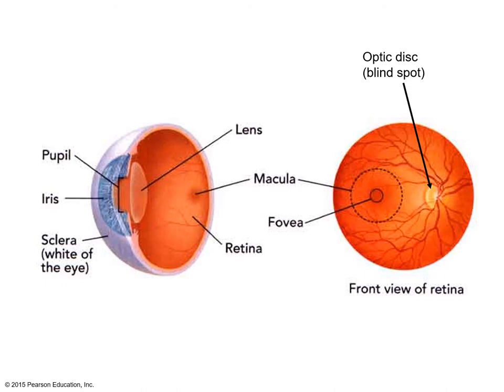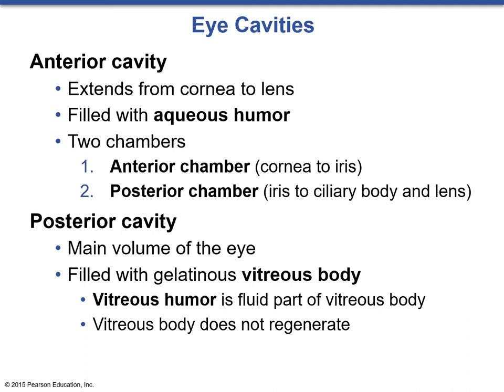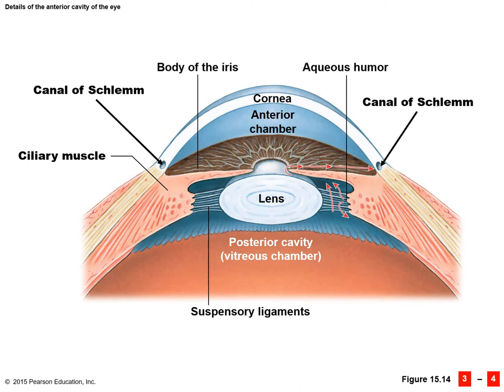The eye can also be broken up into two cavities: the anterior cavity, which extends from the cornea to the lens and is filled with aqueous humor, and the posterior cavity, which is the main volume of the eye beyond the lens. The posterior cavity is filled with the gelatinous vitreous body, composed of vitreous humor as well as a gelatin compound. The vitreous body does not regenerate, but the aqueous humor does.